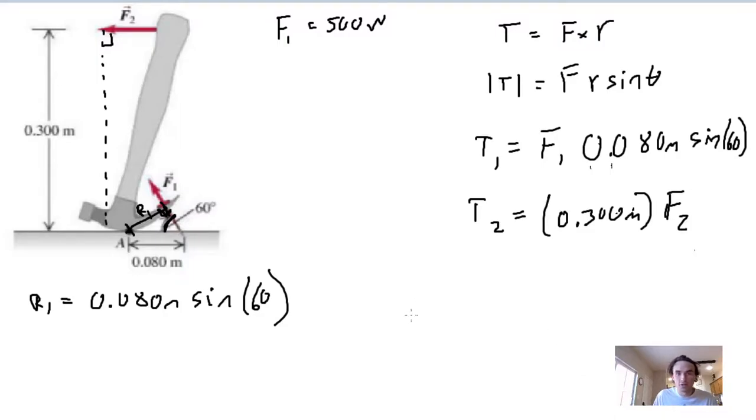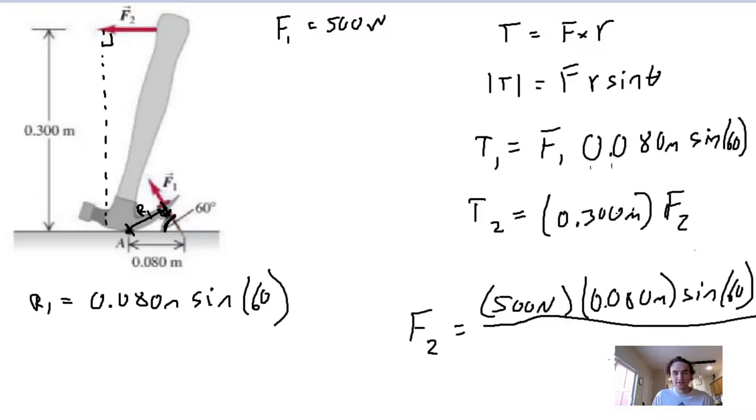We can set those two things equal to each other, and by doing that we can solve for F2, which is what we're looking for, knowing that F1 equals 500. So we can say F2 equals 500 newtons over 0.080 meters times sine of 60, and that's all over this 0.300 meters.